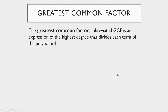The first method we're going to talk about is factoring out the greatest common factor. The greatest common factor, abbreviated GCF, is an expression of the highest degree that divides each term of the polynomial.